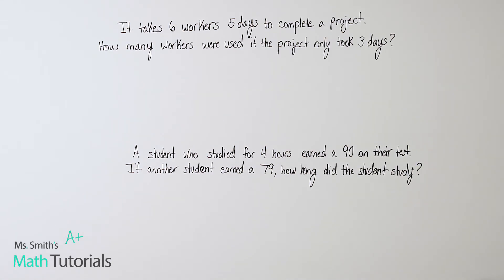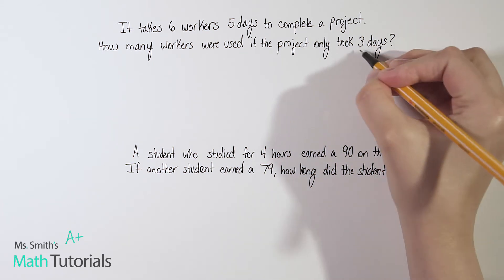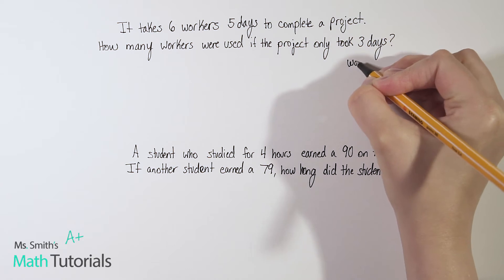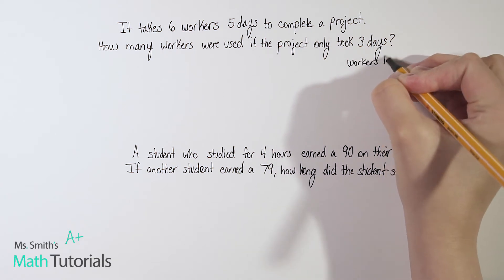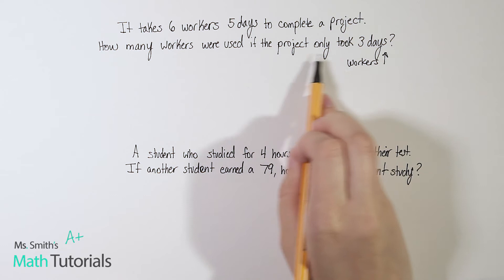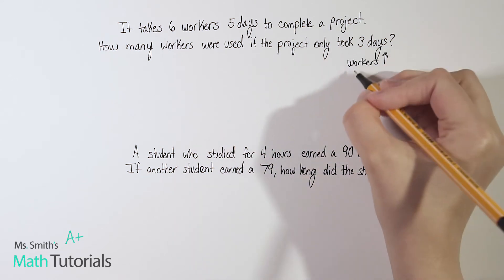Let's look at a couple more examples. It takes six workers five days to complete a project. How many workers were used if the project only took three days? So let's think, do I want to use that direct or indirect here? We've got the number of workers, and then we've got the time it took, and this time they use days, the time it took to get the project done.